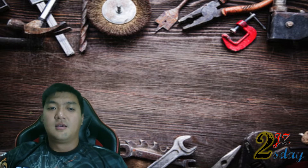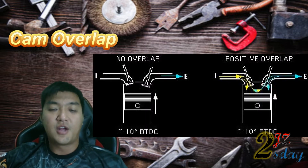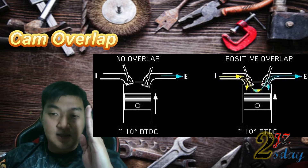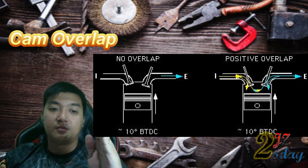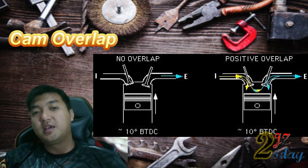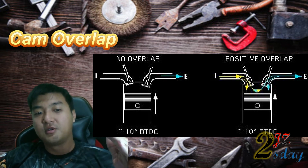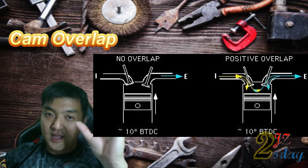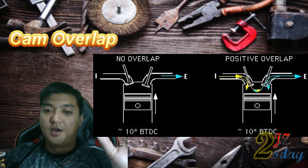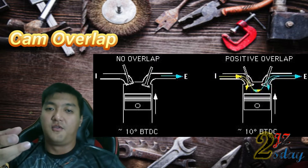Now let's discuss what cam overlap is. Cam overlap is the angle in crankshaft degrees that both the intake and exhaust valves are open at the same time, and this occurs at the end of the exhaust stroke and the beginning of the intake stroke. If you increase the lift and duration of both the intake and exhaust cam, both will increase the overlap.